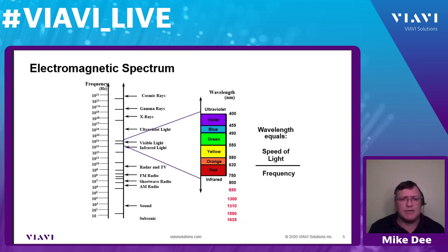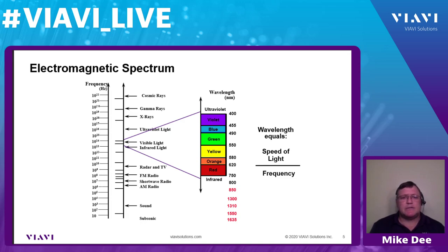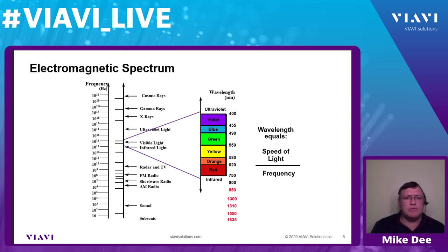We transmit light in telecom using nanometers. Wavelength equals the speed of light divided by frequency, where frequency is in terahertz. We speak in nanometers. If we look at a rainbow — red, orange, yellow, green, blue, violet — those are visible colors. Our telecom transmissions are in the infrared spectrum, meaning they're invisible to our eyes.